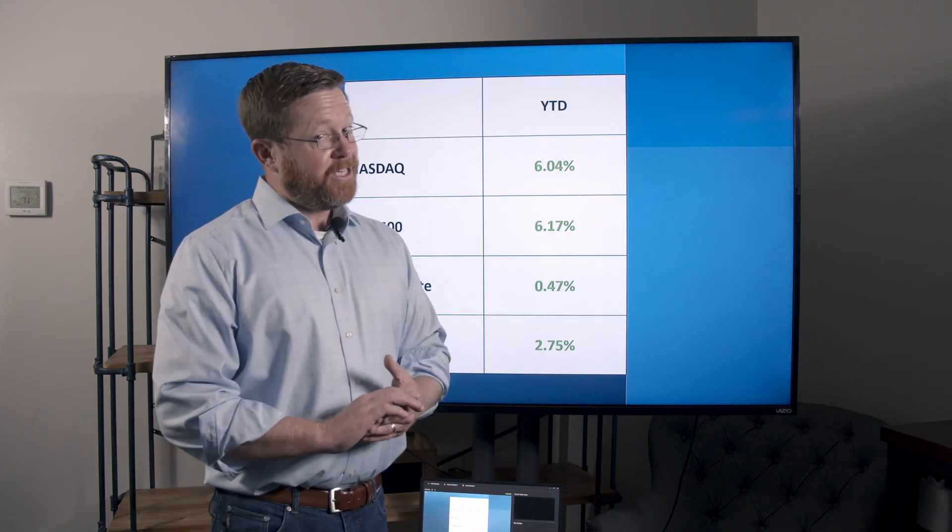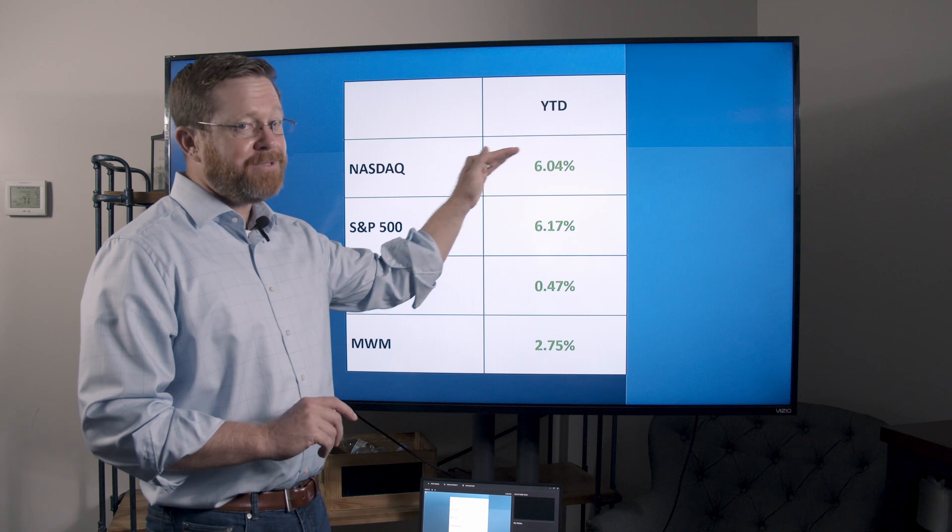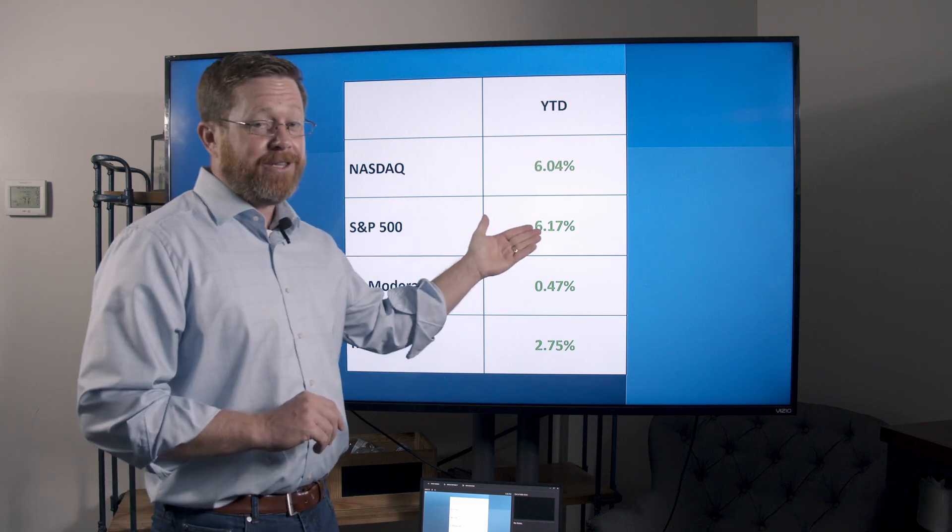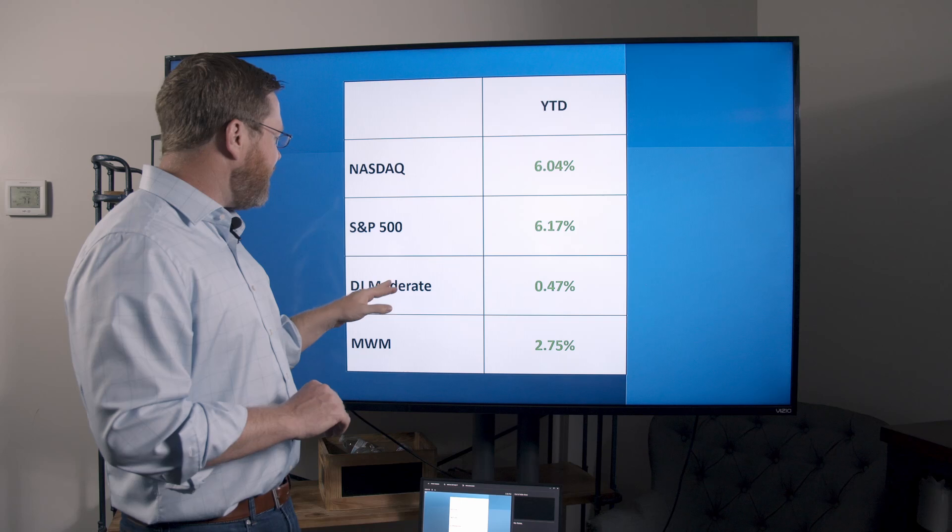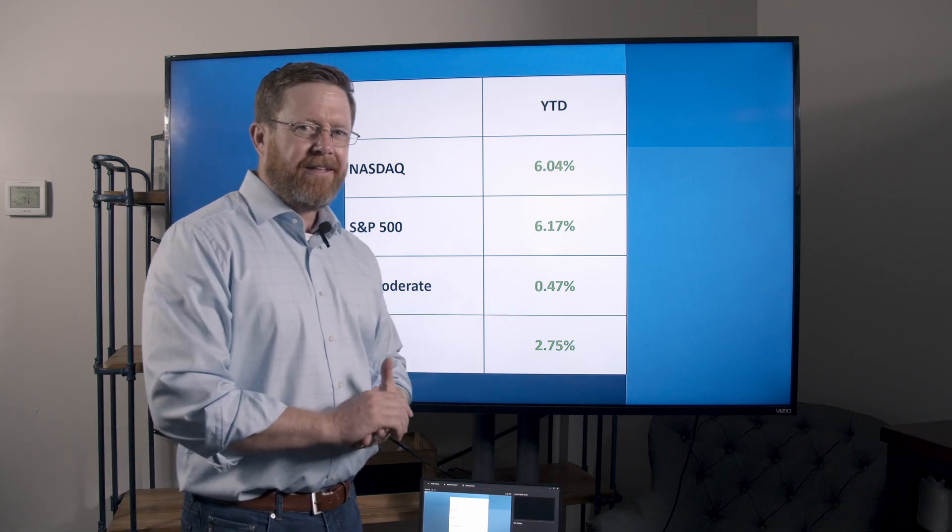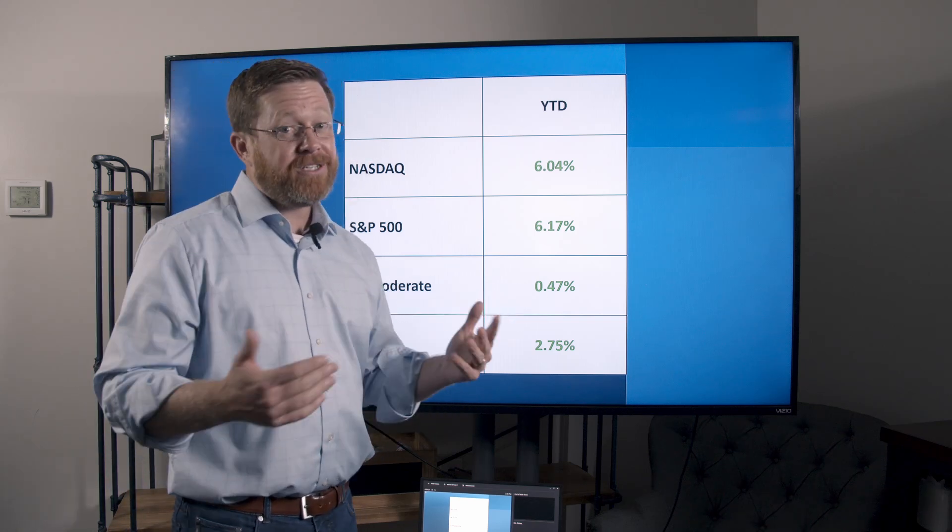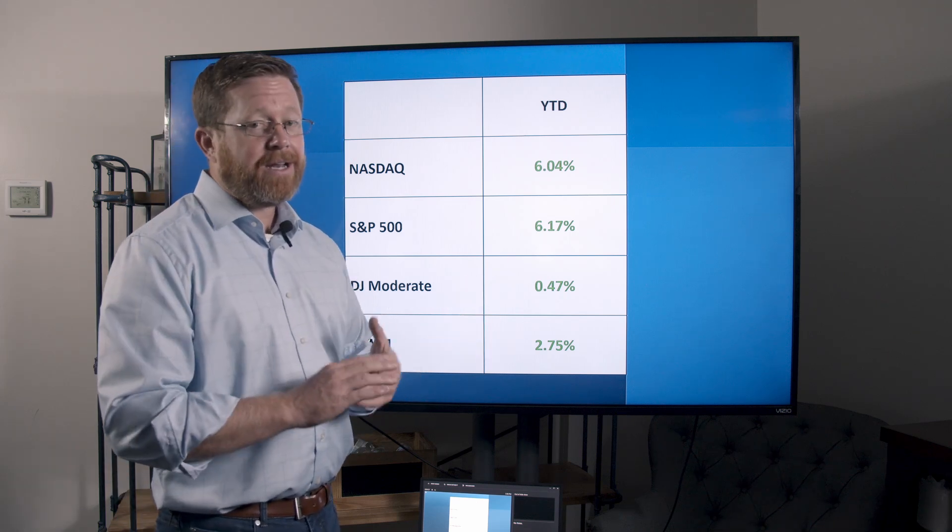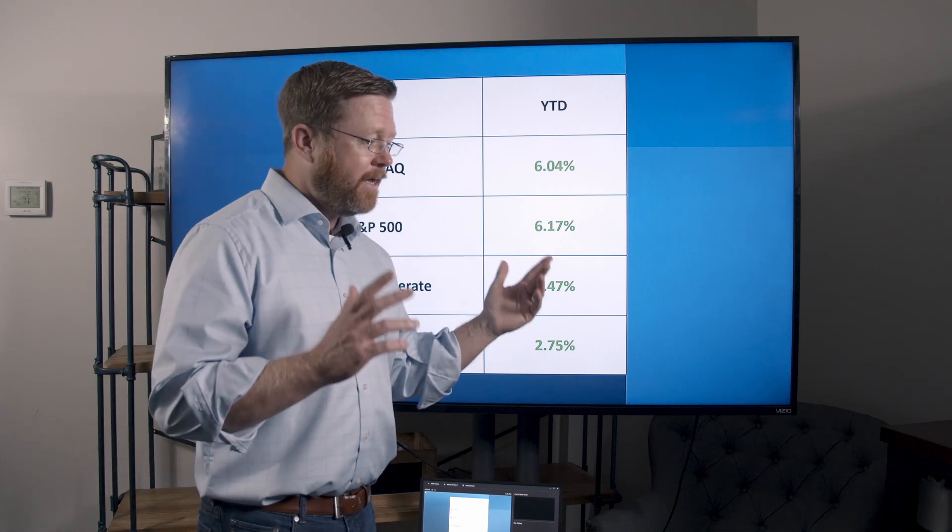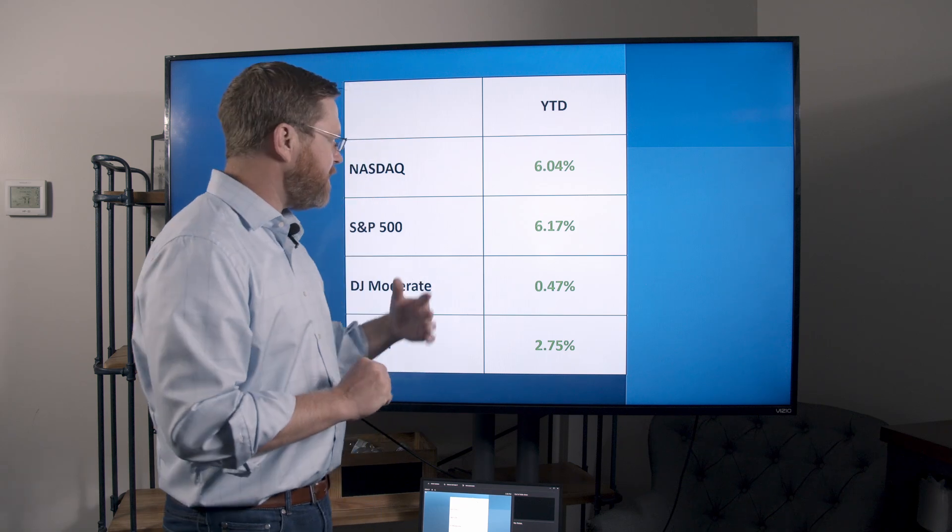Year-to-date, NASDAQ gave up pretty much everything. Downs are only up 6% on the year. S&P is actually beating it in the month of April, which is shocking. Dow Jones moderate, half a percent year-to-date. It's better than zero, but it's not even inflationary. And we're happy, 2.75%. Not great, but beating what we kind of track. It is what it is.